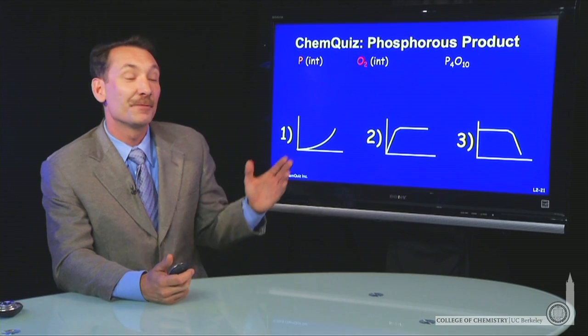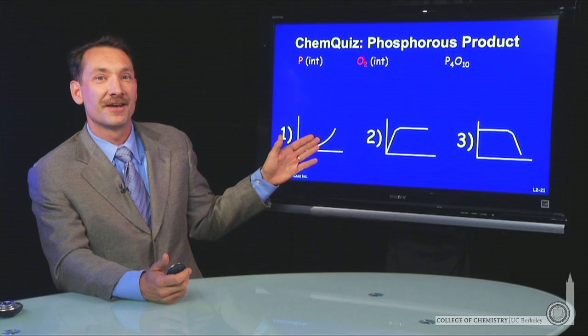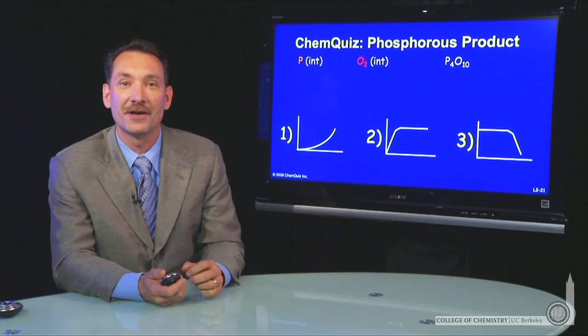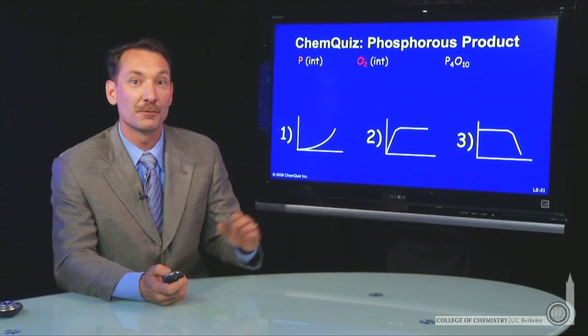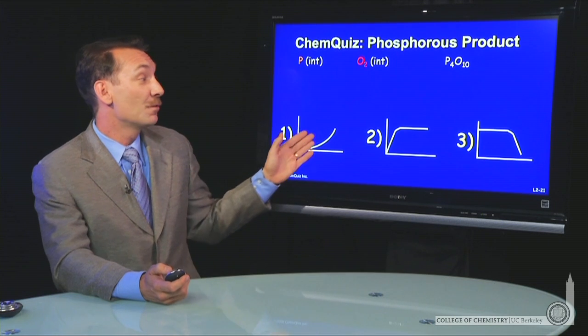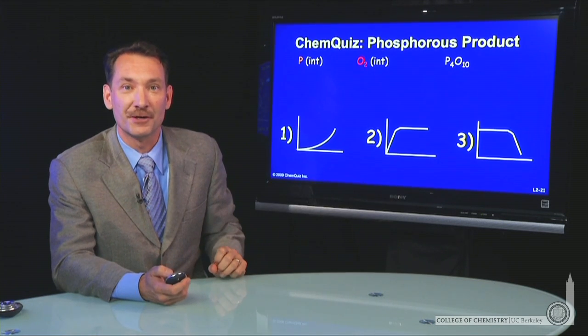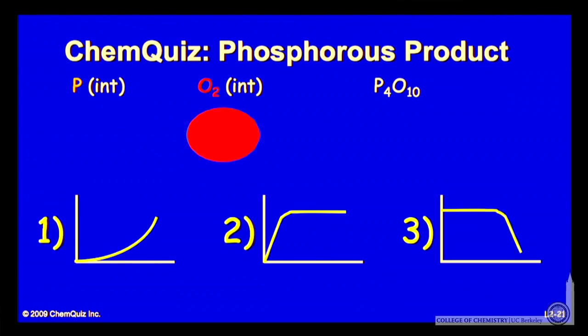If we plot the production of phosphorus oxide versus initial amount of phosphorus in a reaction where the amount of oxygen is fixed, which possible graph depicts the reaction? Well, if you start with a fixed amount of oxygen and add some phosphorus, you'll produce some phosphorus oxide.